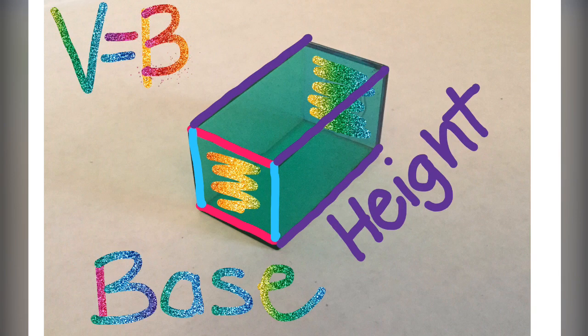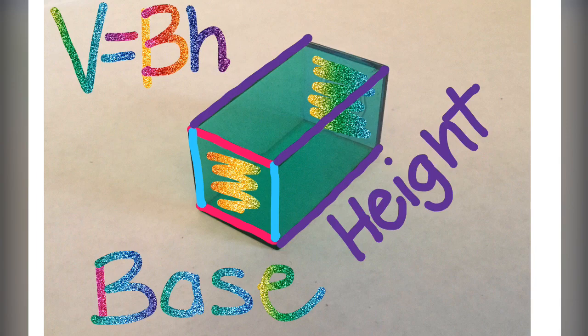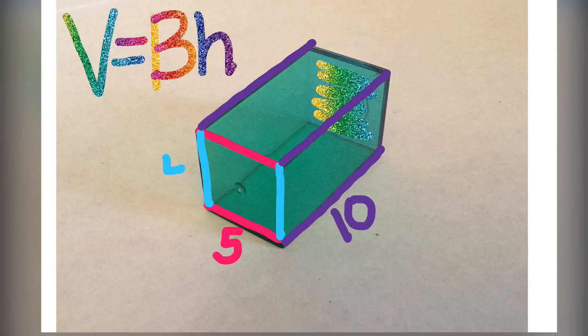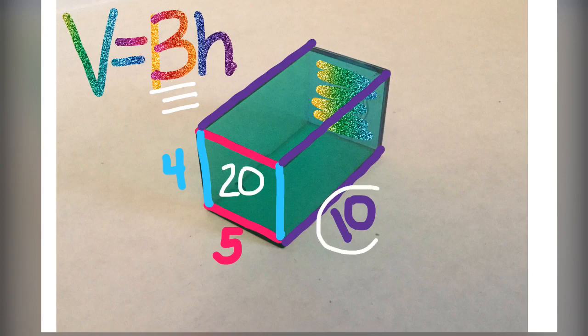Remember, to find volume, it's big B times H, where big B represents the area of the base. So that means, if I give you measurements for this rectangular prism, we're going to go ahead and solve for volume. First thing we have to do is find big B, or the area of the base. That, here, is just 4 times 5, which is 20. Then we identify the height of the shape, which is 10.